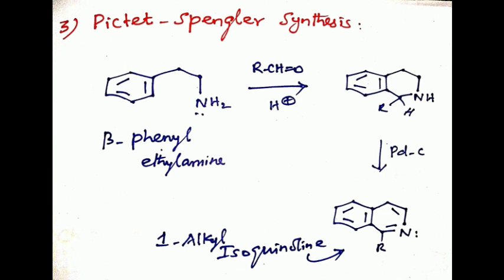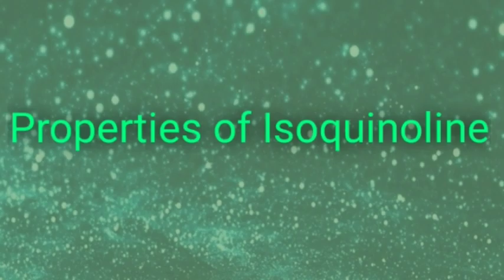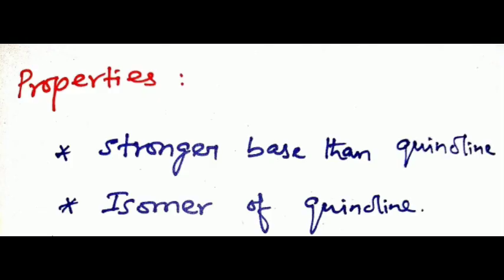Next subheading: properties of isoquinoline. Isoquinoline is a stronger base than quinoline. It is an isomer of quinoline. These two compounds are position isomers because quinoline nitrogen atom is in the first position, whereas in isoquinoline the nitrogen atom is in the second position.